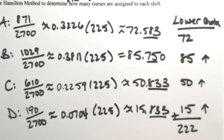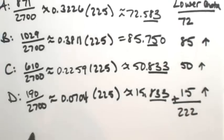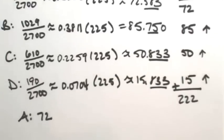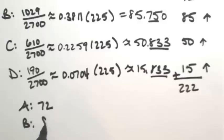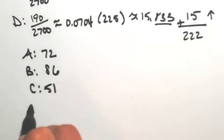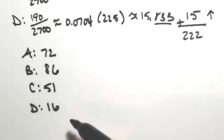So altogether, using the Hamilton method, shift A is going to have 72, shift B is going to have 86, shift C will have 51, and D will have 16. So if we add all of this together, now we're going to get the 225.